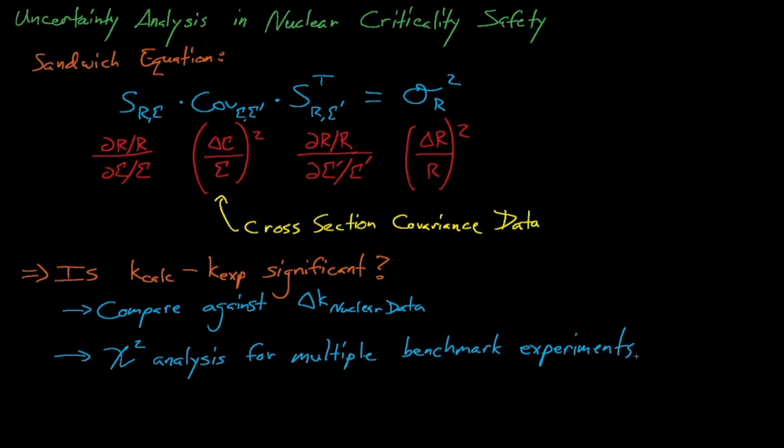This nuclear data uncertainty propagation technique can do even more amazing things. Perhaps most amazingly is its ability to identify benchmark experiments that are neutronically similar to some target application. Imagine that we're trying to identify the ideal, perfect benchmark experiment for predicting the computational bias in some application. What traits do we want this perfect benchmark to have?